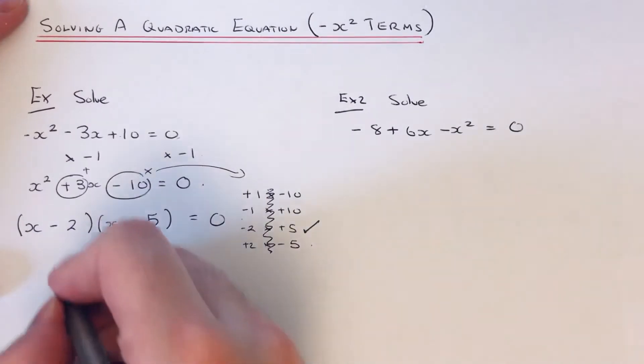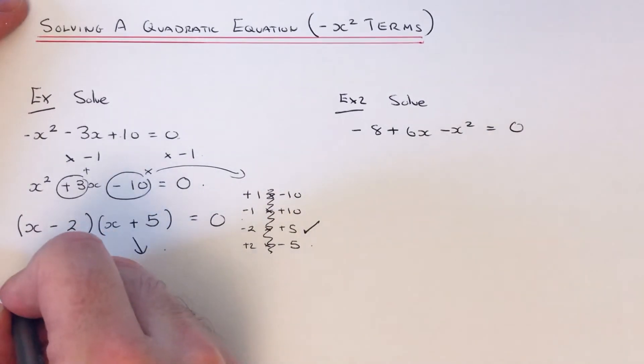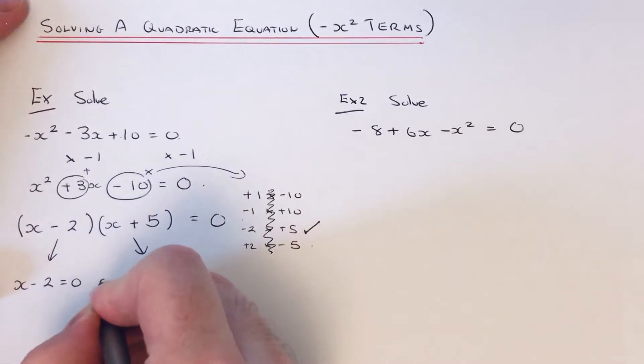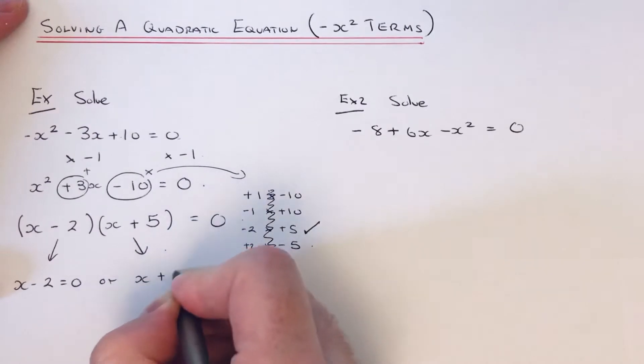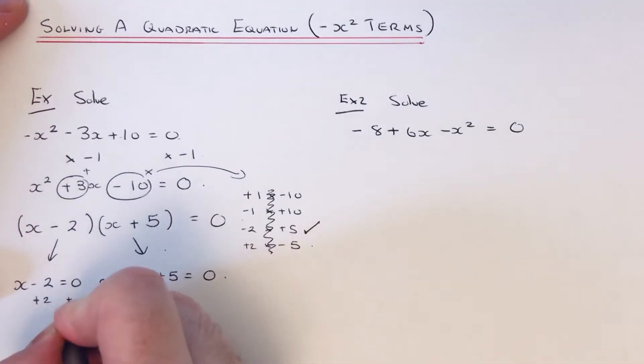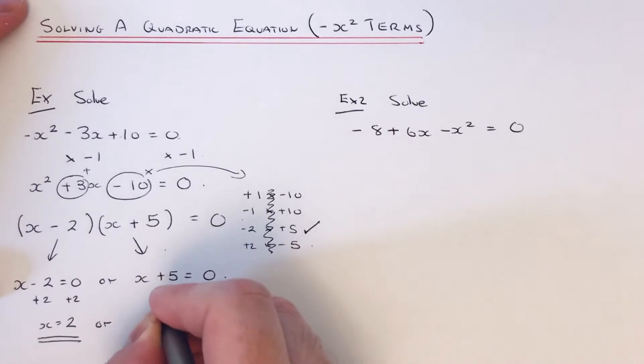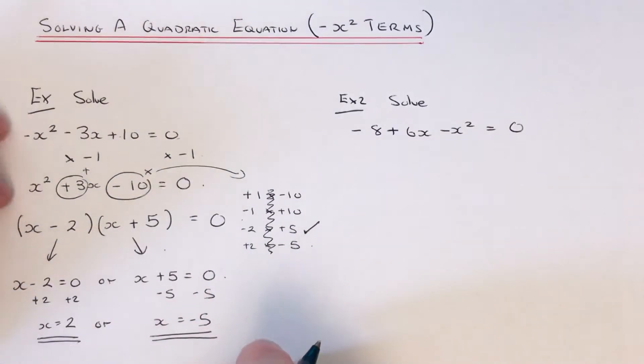So once you've done this, you can now split that into two separate equations. So our first equation would be x minus 2 equals 0, and our second one would be x plus 5 equals 0. And then just solve each one of these. So the opposite to minus 2 is plus 2, so 0 add 2 is 2. So our first solution is 2. And then the opposite to plus 5 is minus 5, so 0 take away 5 is minus 5. So our two solutions are x equals 2 or x equals minus 5.